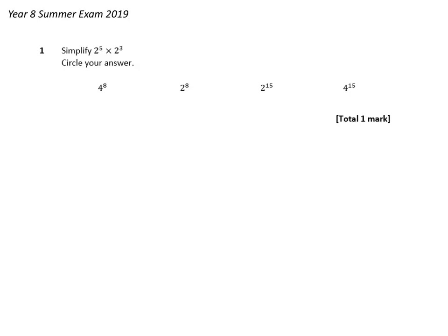In this question, we notice that the base, which is 2, is the same in both 2 to the power of 5 and 2 to the power of 3. And therefore, because they have the same base, we can apply the index law, which is to add the powers together.